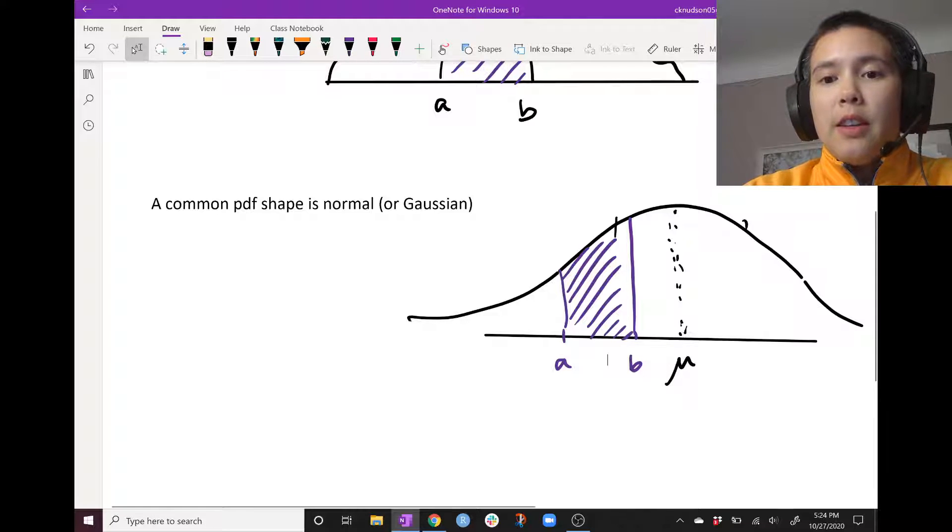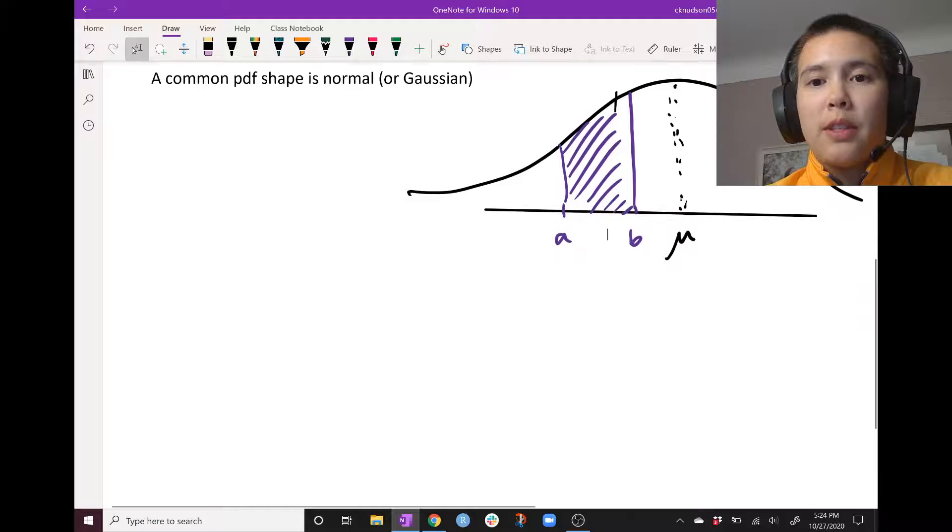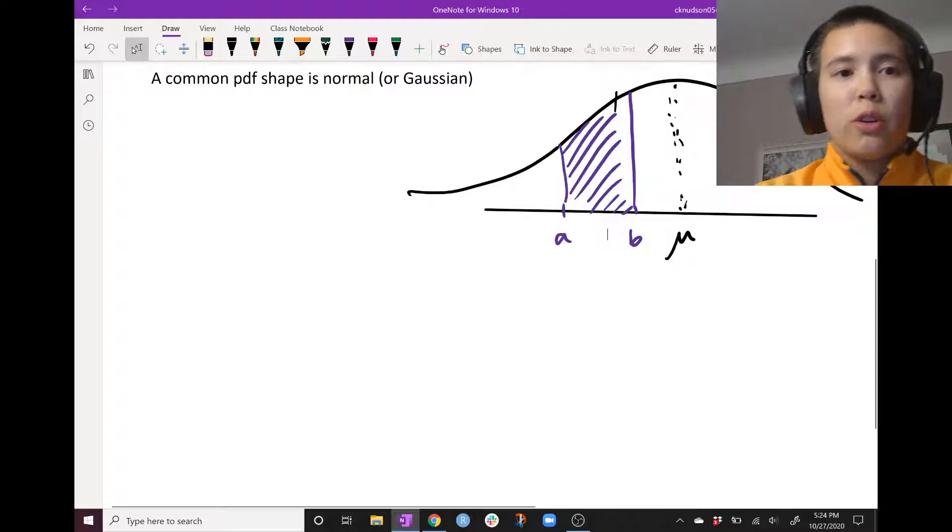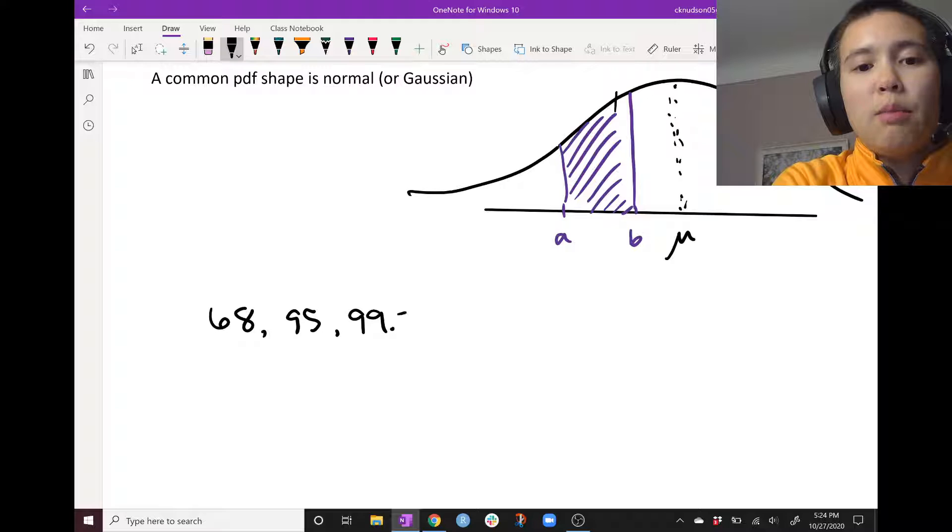Now, calculating these areas can be a little bit tedious, but we have some known shortcuts. In particular, we have something called the 68, 95, 99.7% rule.